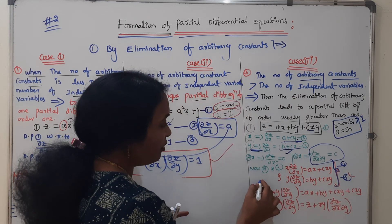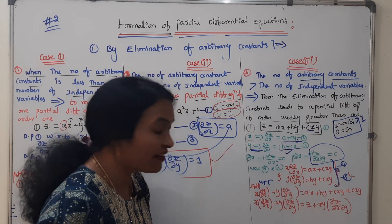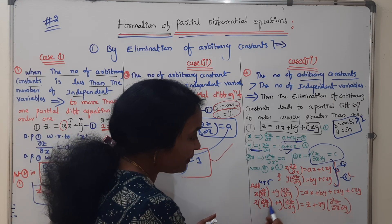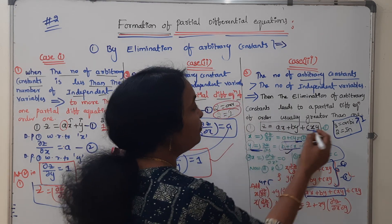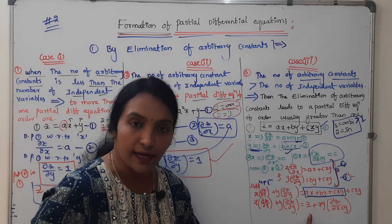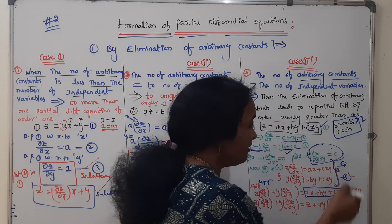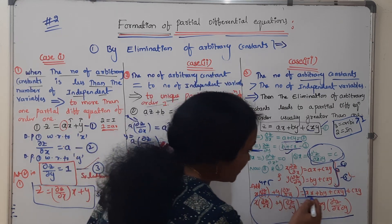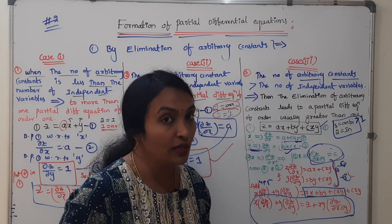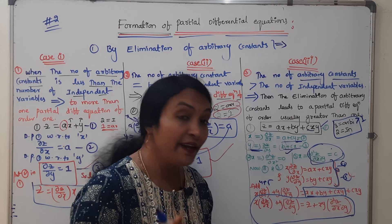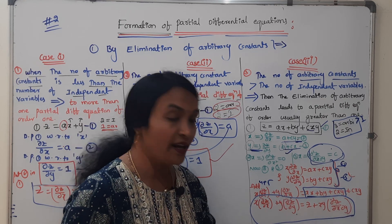Adjust equations 4 and 5. Left-hand side and right-hand side adjust. x into dou z by dou x plus y into dou z by dou y — this gives ax plus by plus cxy, which is nothing but the given equation z. Substituting c value, if you observe the final equation, there are no arbitrary constants. So the solution is unique and of order more than 1 — specifically order 2: dou square z by dou x dou y.